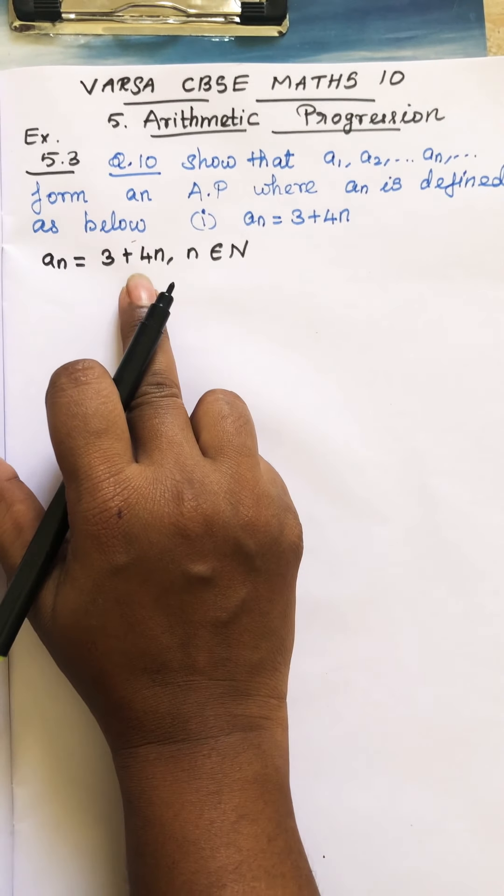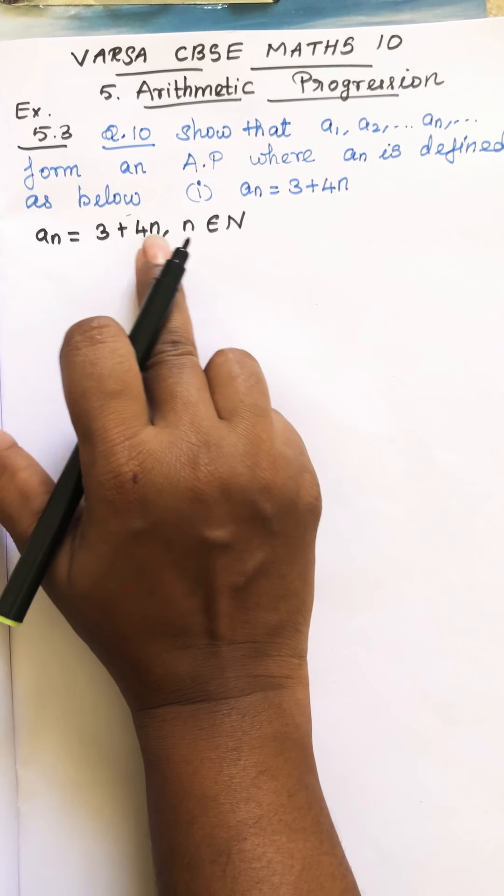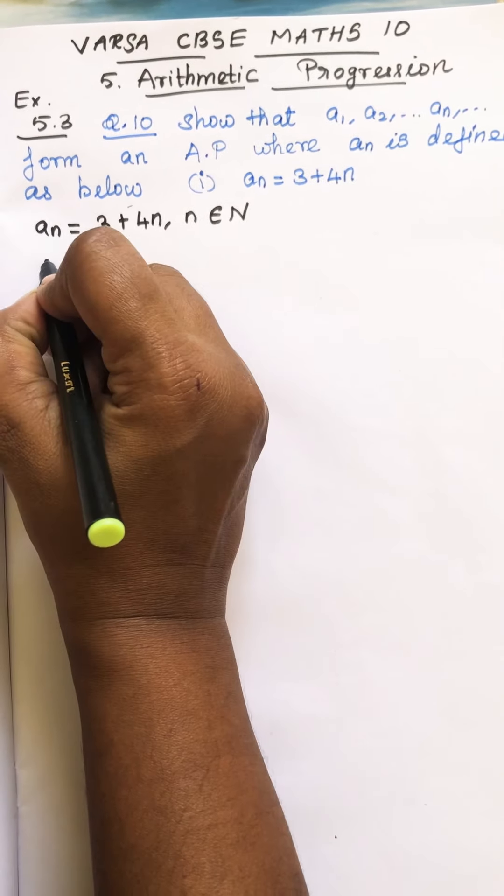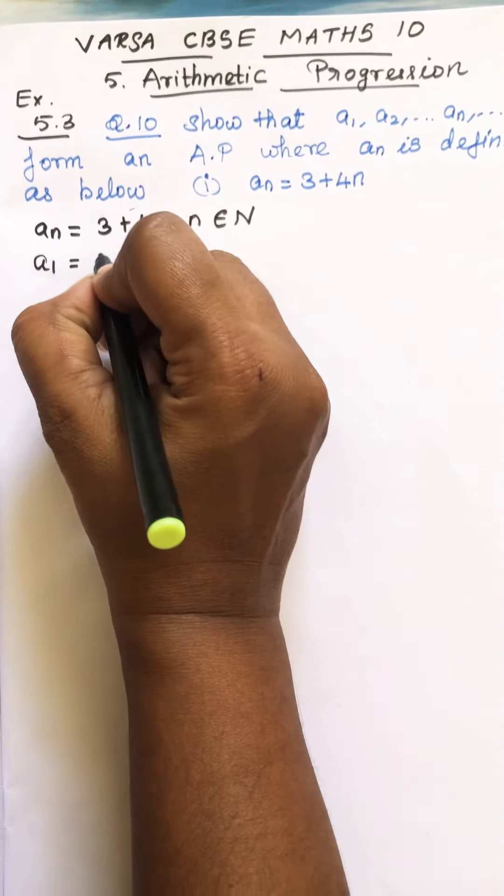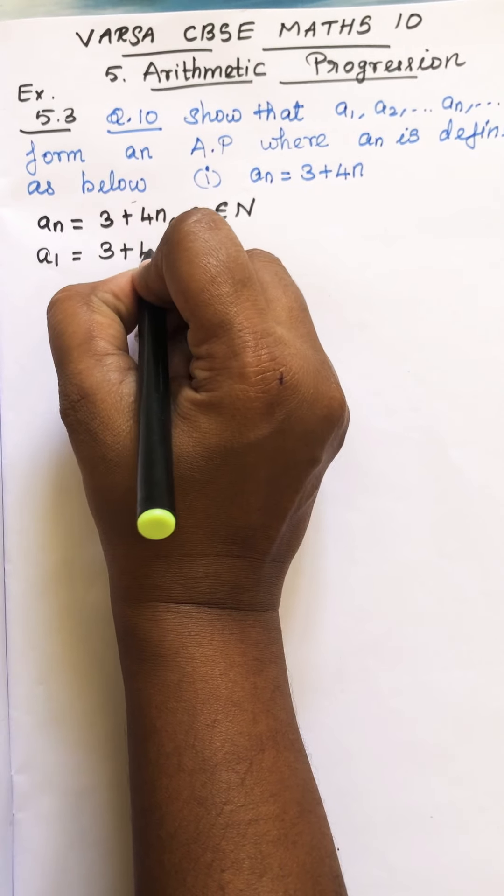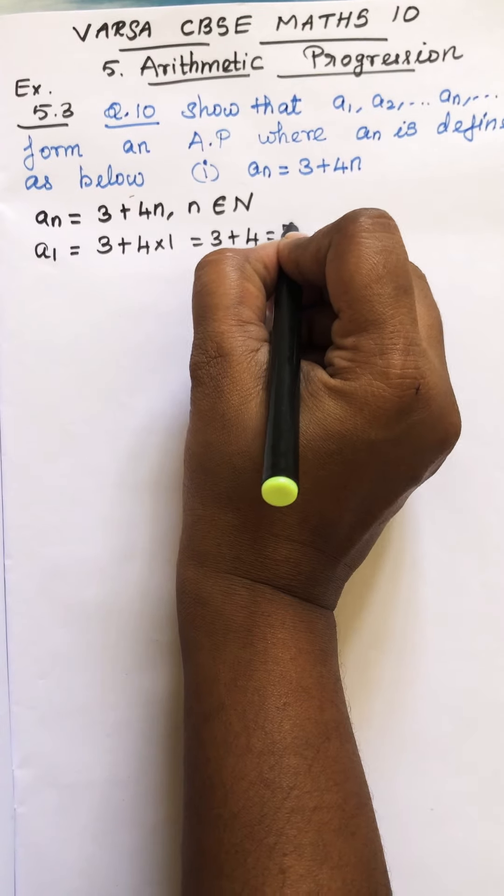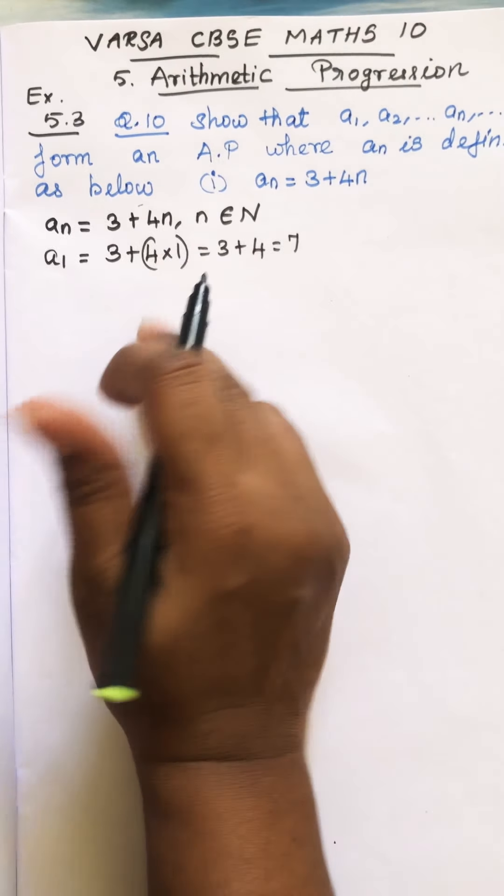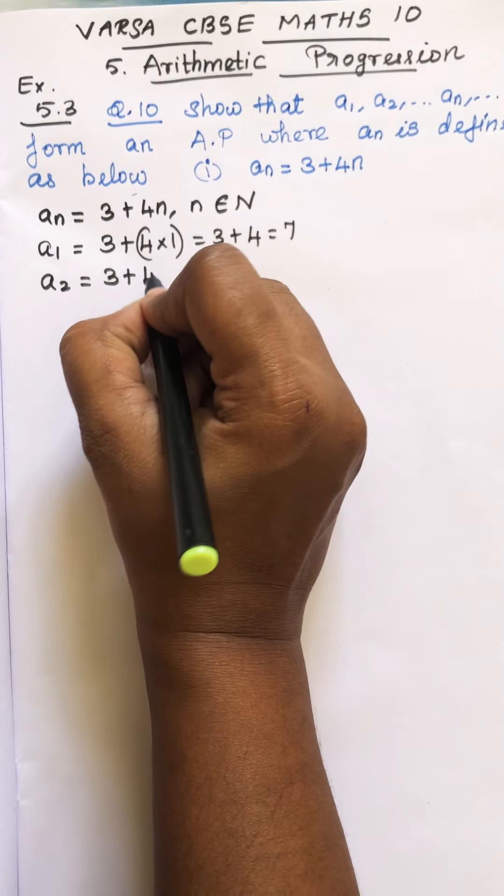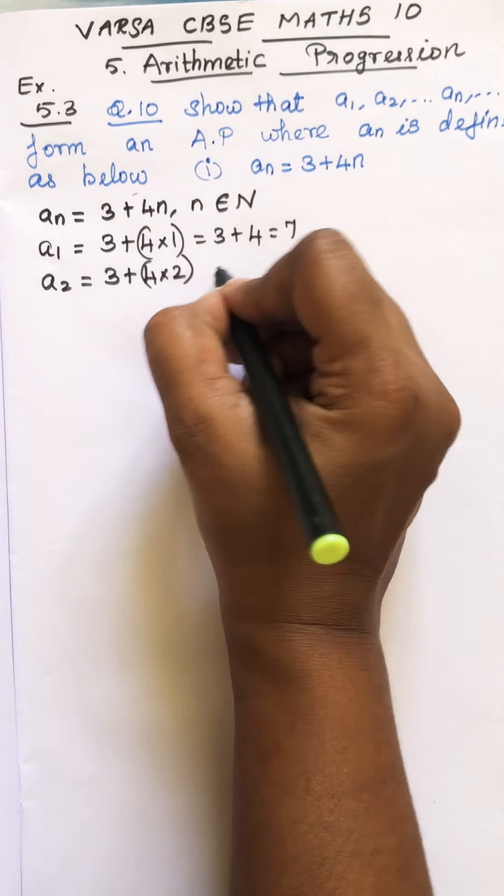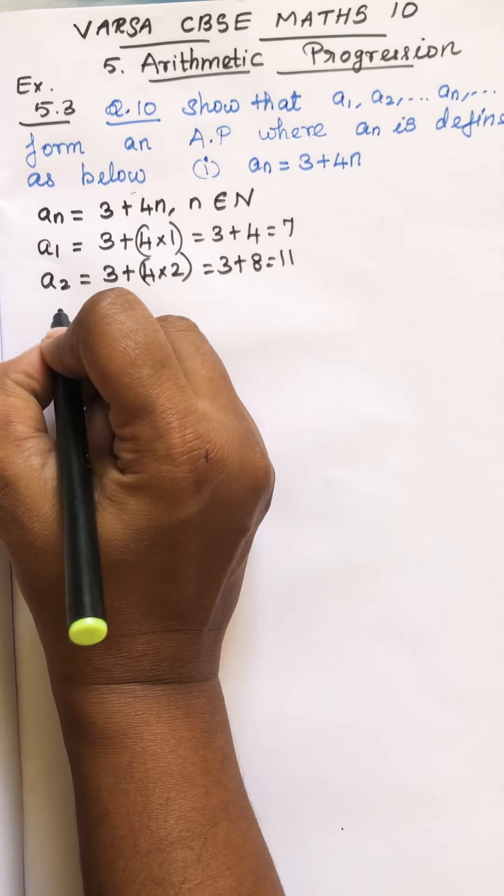It means you have to substitute for small n: 1, 2, 3, 4. So when you substitute 1, what do you get? 3 plus 4 into 1. So this is 3 plus 4, that is 7. So what is a2? 3 plus 4 into 2. This is 3 plus 8, so you get 11.